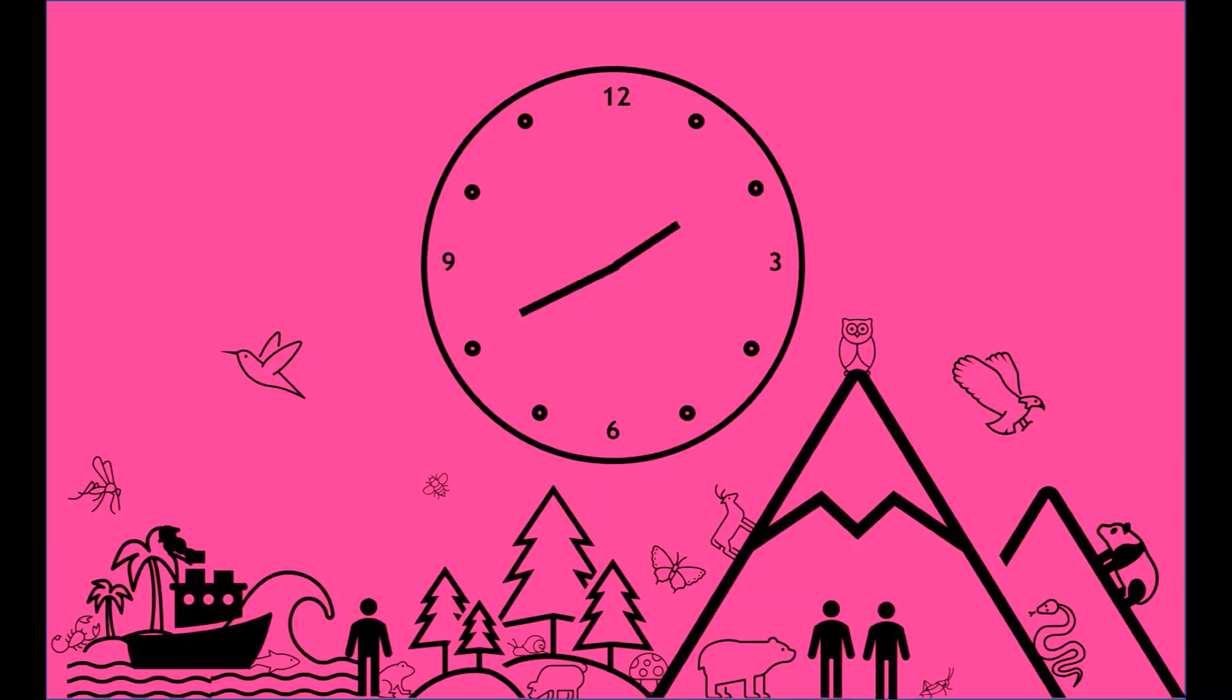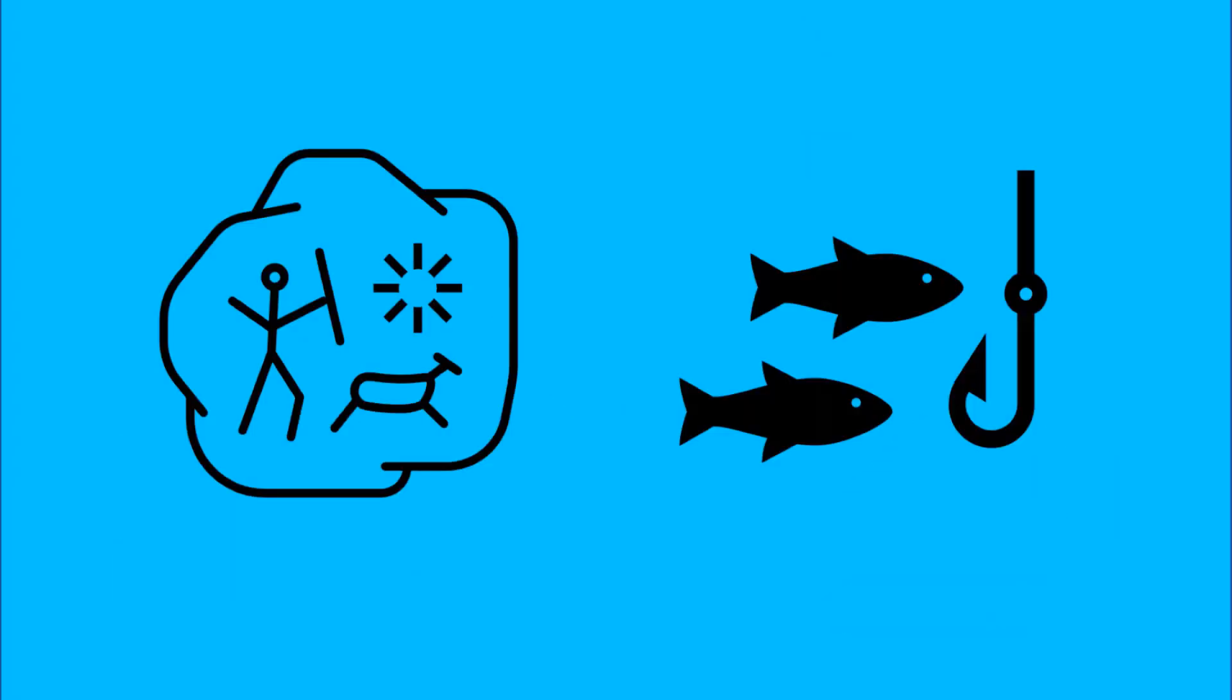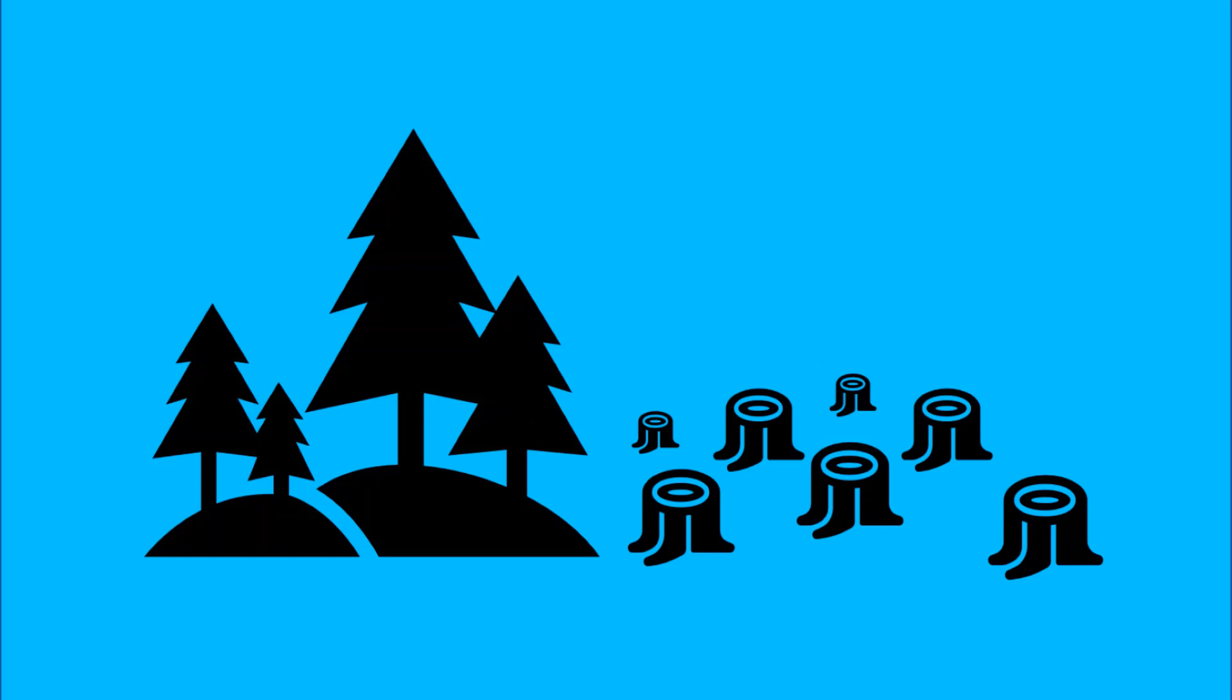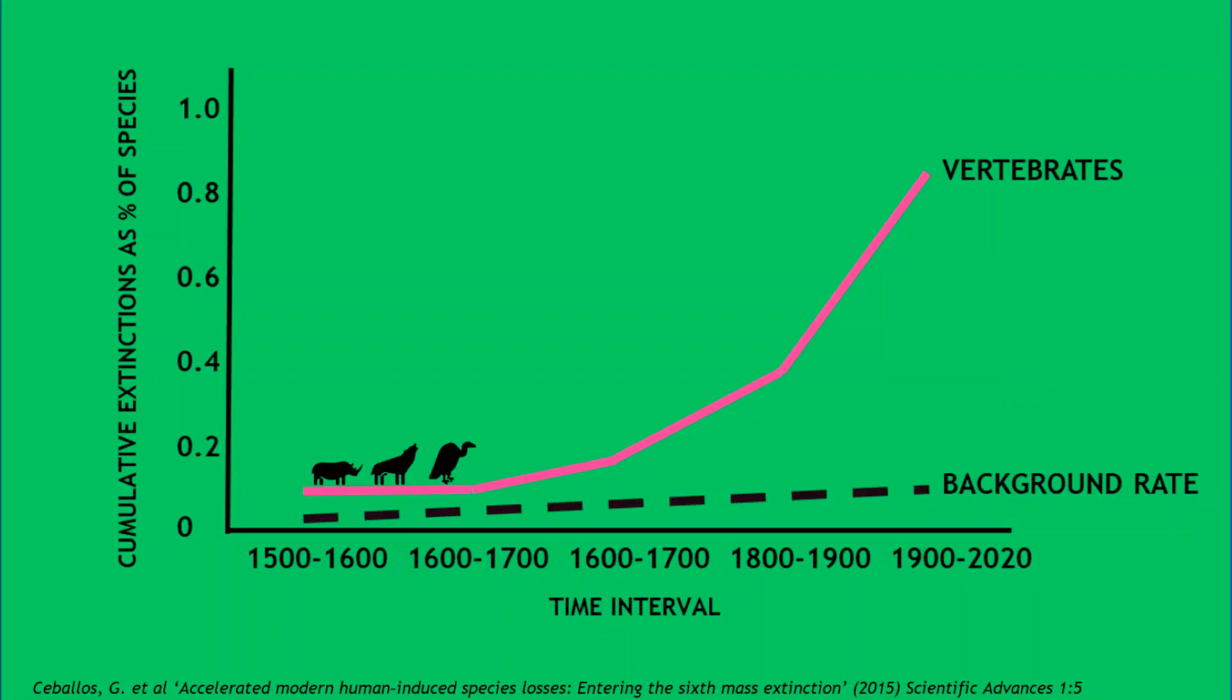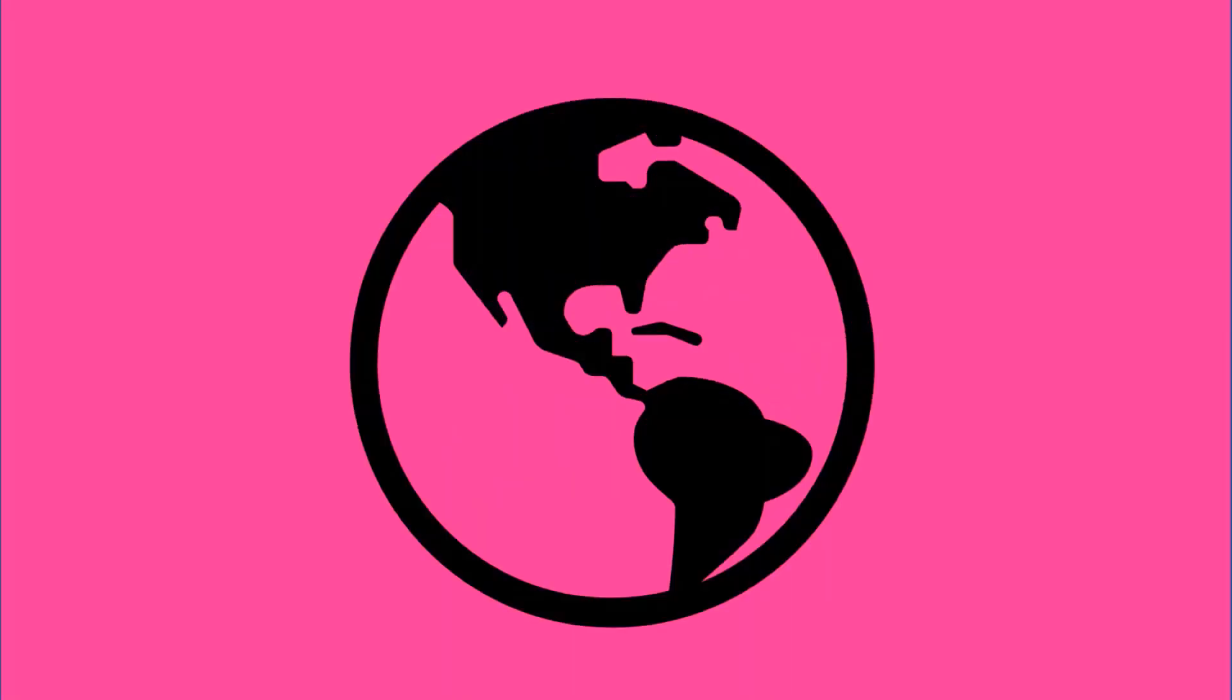But increasingly, the influence of humans is also having an effect. Activities like deforestation and excessive hunting has destroyed habitats and caused whole species to go extinct. Current loss of the earth's species has been estimated at more than 1,000 times higher than the natural rate of extinction.